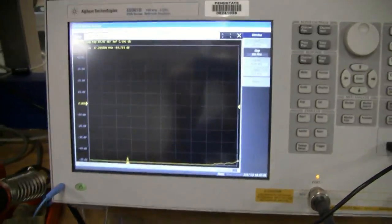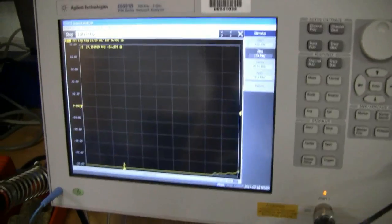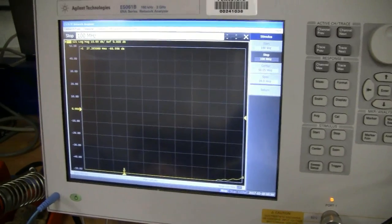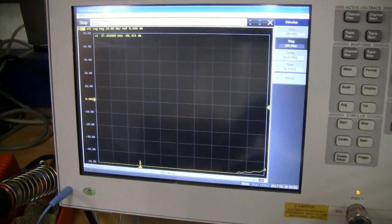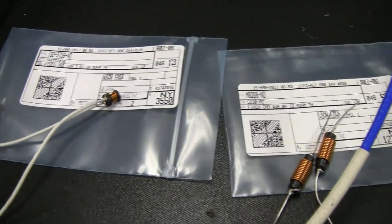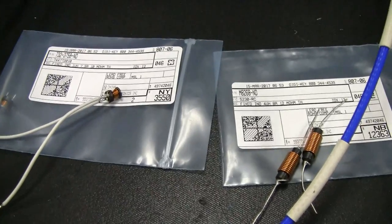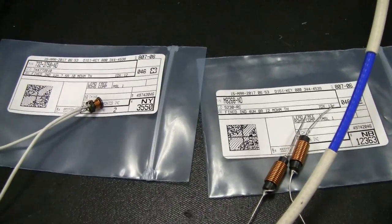So we're going to hook these up to the network analyzer and see how well they attenuate a radio signal that could possibly come in through your power line. If you think about a mobile application, if you have a radio in your car, then you could have noise coming in from your vehicle ignition coils and that kind of thing.